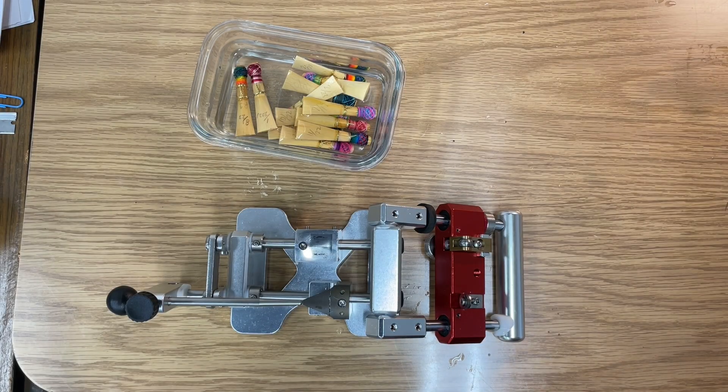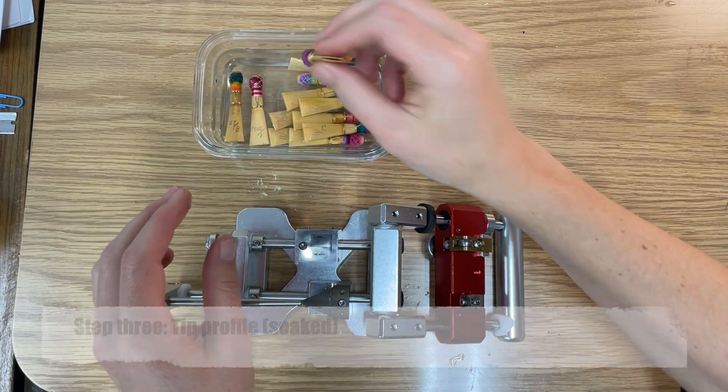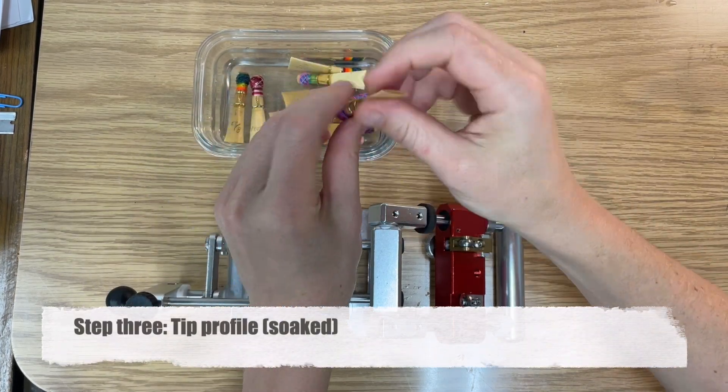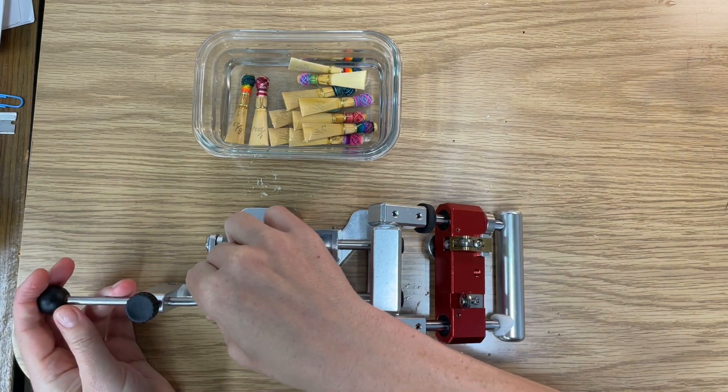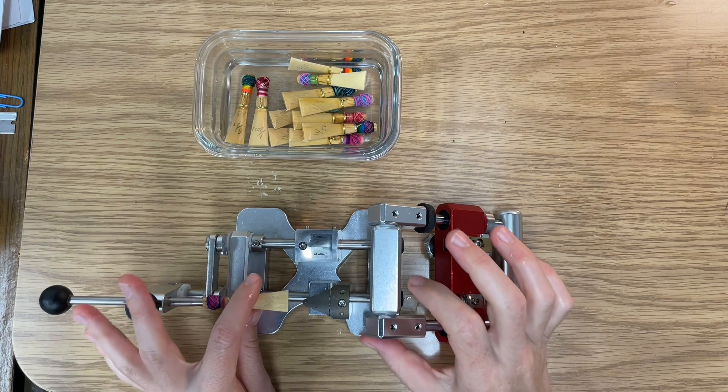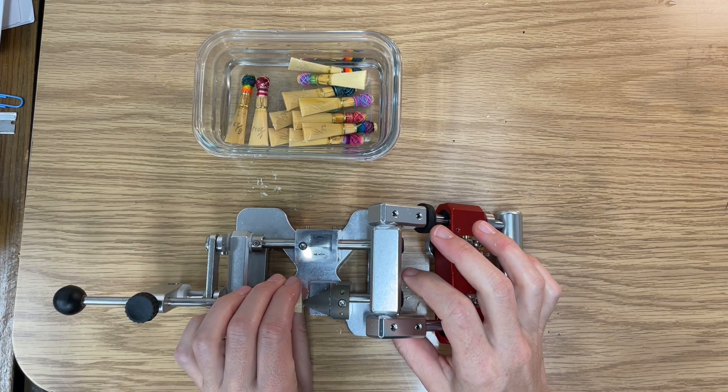So now that my clipped, reamed reeds have soaked at least five minutes, I'm going to place them on the Andante Rondo tip profiler by putting them on the mandrel and then very gently sliding them onto the plaque.